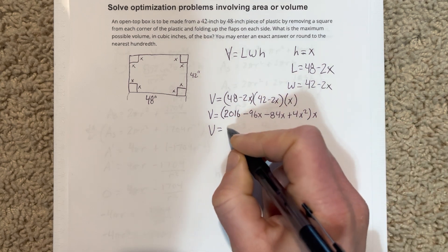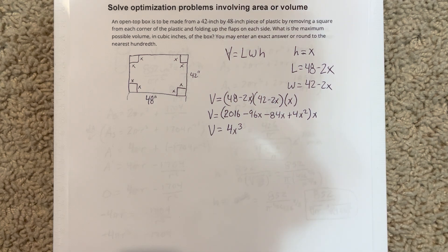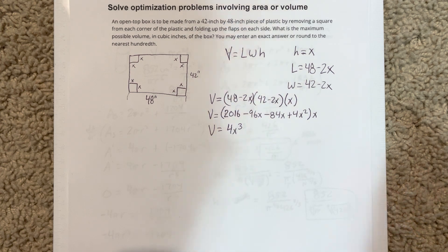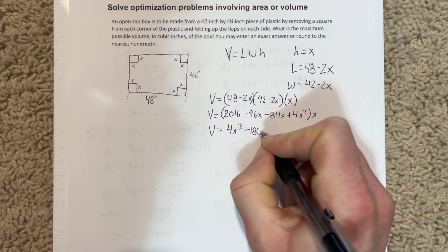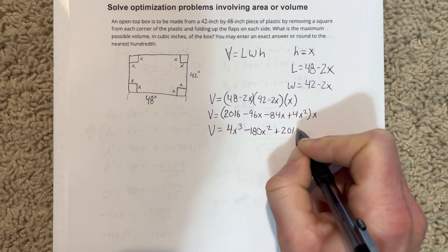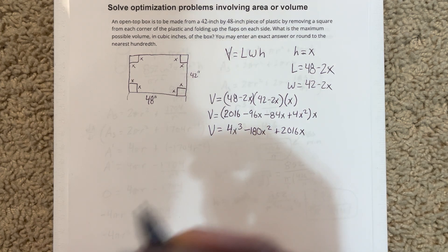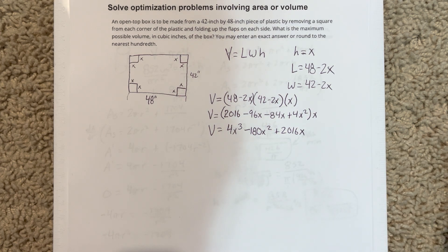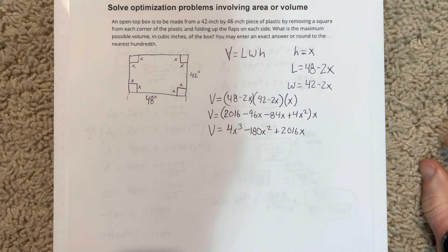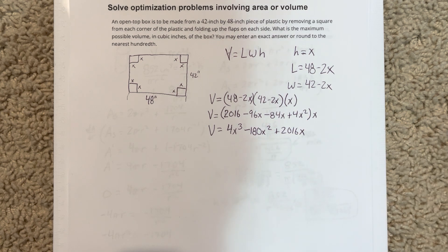So if we rewrite this, this would be 4X cubed, this will be negative 96 minus 84 is negative 180X squared, plus 2016X. So that's our volume equation that we have here. And before we differentiate this, because we're going to have to differentiate this and set it equal to zero to find the maximum or minimums. We're using that first derivative to do that.